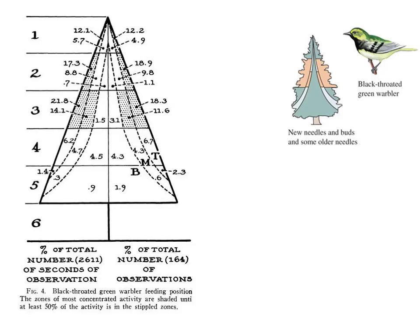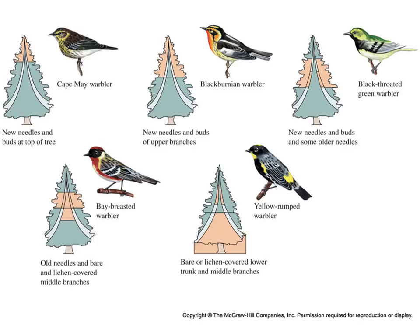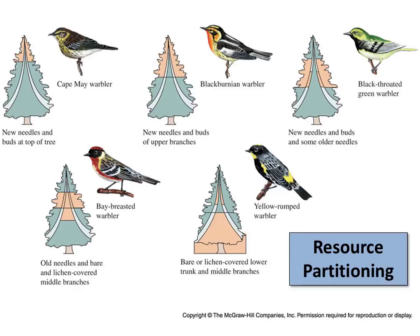These data are simplified in this illustration, where the peach color represents regions where the birds were found. He repeated the same analysis for all five species and obtained the following results. As you can see, all of these species focus their foraging in different zones, extracting food from different parts of the forest, if you will. MacArthur concluded that this resource partitioning reduced competition between the species and allowed them to coexist in the same location.